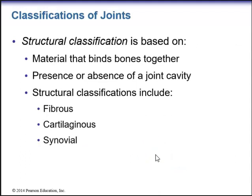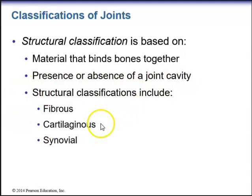We also have the structural classification of joints. Structural classification is based on the material that binds the bones together and the presence or absence of a joint cavity. Structural classifications include fibrous joints, cartilaginous joints, and synovial joints.